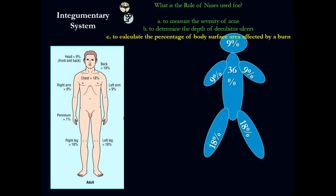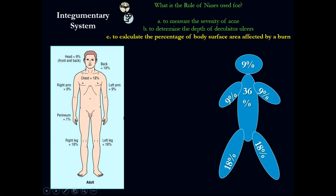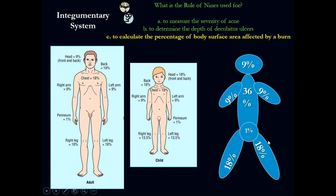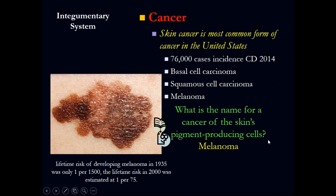Then we have the rule of nines for body surface area. Nine percent for the whole head, anterior and posterior combined. The whole upper extremity — both sides anterior and posterior — is 9%. The trunk is 18% anterior plus 18% posterior for 36%. The lower extremities are 18% each. The perineum is about 1%.